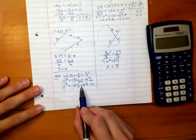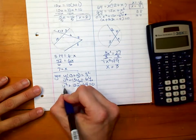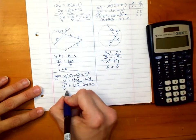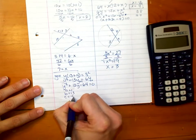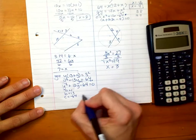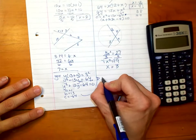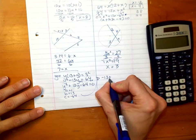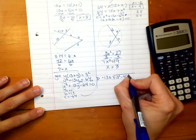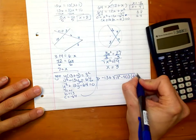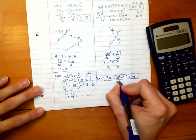Now there aren't two factors of 64 that subtract to equal 13, which means we have to use the quadratic formula. So our A is 1, our B is 13, and our C is negative 64. So follow me up here, and we will say negative B plus or minus the square root of B squared minus 4AC all over 2 times A.